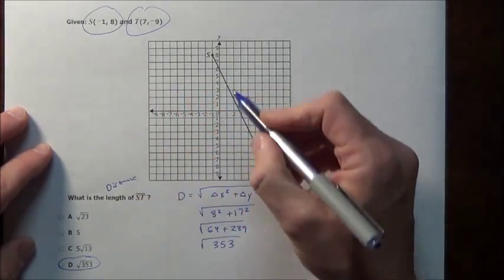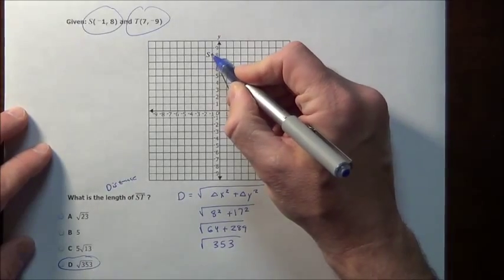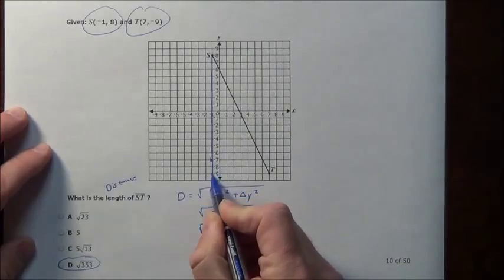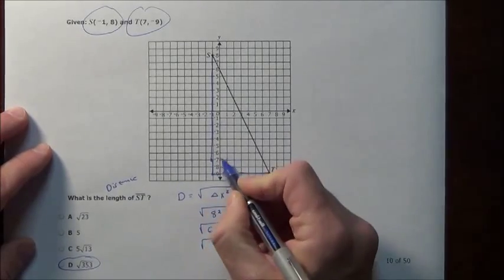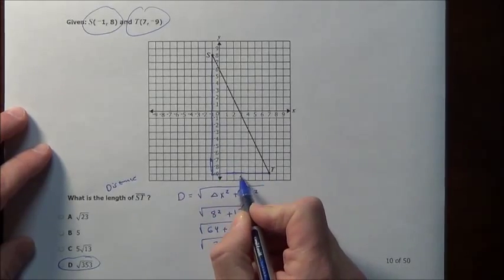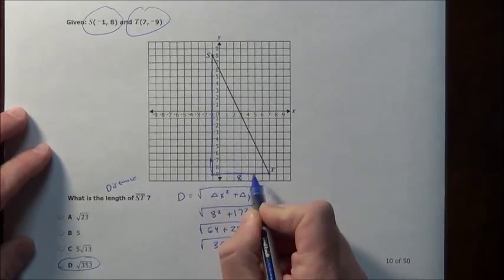Now again, where this comes from is literally in this picture, if you drew this all the way down to here and across, notice you have a right triangle. The distance from here to here is 8, so that one leg is 8.